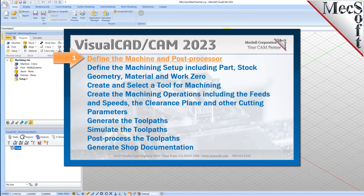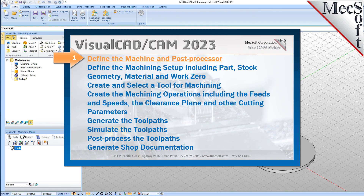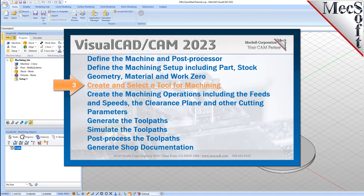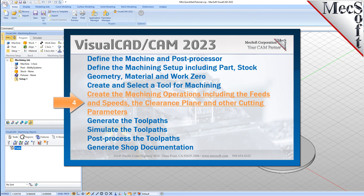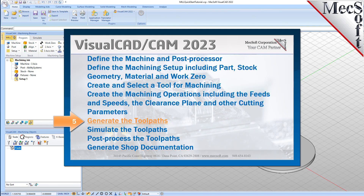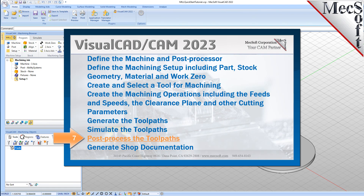We will perform the following basic steps in machining this model. First, we will define the machine and the post processor to use. Then we'll define the machine setup, including the stock geometry, material, and work zero. Then we'll create and select a tool to use for machining. We'll create the machining operations, including the feeds, speeds, the clearance planes, and other cutting parameters. Then we'll generate the toolpaths, simulate the toolpaths, post-process the toolpaths, and then generate shop documentation.